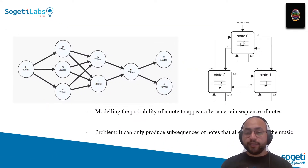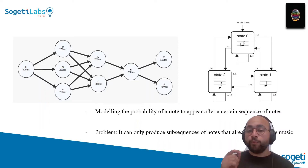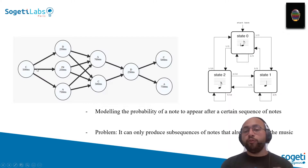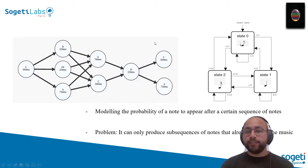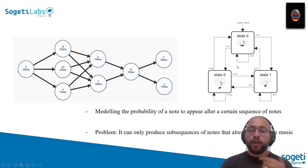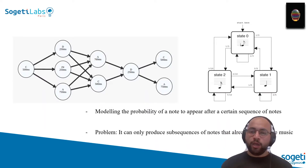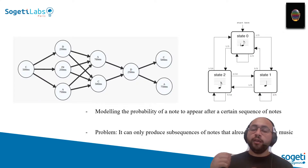In our case, for our music, we are modeling the probability of a note appearing after a certain sequence of notes. For example, imagine we start with a C note at 500 milliseconds tempo — what is the probability that the next note will be a D, an F sharp, or an A? We are in state zero, we have a C note, and we have a half chance to go to state one, which is for example D, and so on. But the problem with Markov chains is they can only produce subsequences of notes that already exist in the music, which means we are never going to produce truly new music.